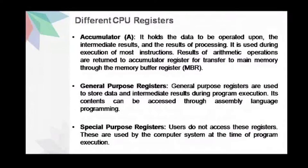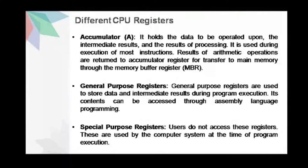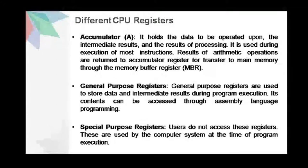Let us look at the different CPU registers. The number of registers may vary from computer to computer, but there are some registers which are common to all computers. Some of these are the accumulator, general purpose registers, and special purpose registers. The accumulator is one of the most frequently used registers. It holds the data to be operated upon, the intermediate results, and also the results of processing. It is used during execution of most instructions. The results of arithmetic operations are returned to the accumulator register for transfer to main memory through the memory buffer register.